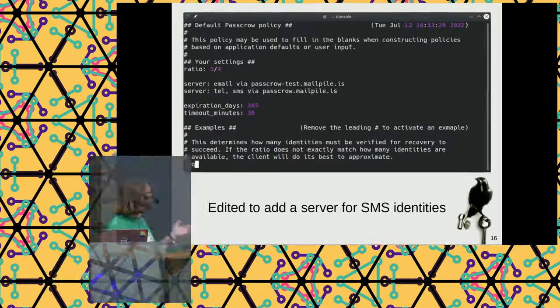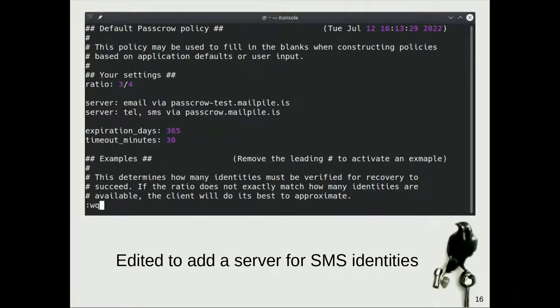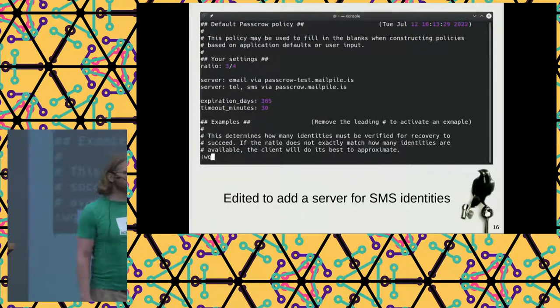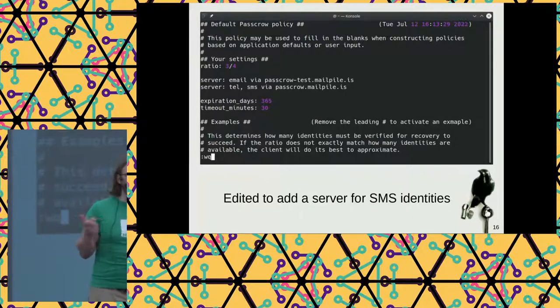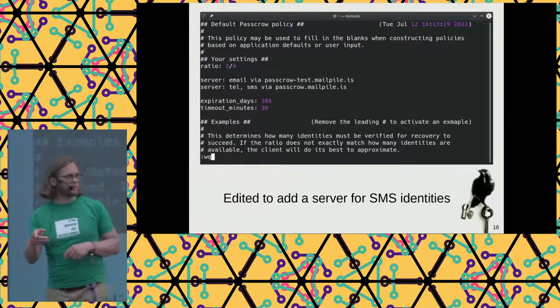You can see some interesting things here. I've edited the defaults to add some bits. I'm specifying the ratio — three out of four. So if I give PassCrow four identities, it will require three of them for recovery to succeed, by tuning the parameters to the Shamir algorithm. And there are some timeouts — I can say I want this data to expire in a year, or in 10 years, or in five days. Has anyone here not recovered a password from something like Gmail? Everyone's done it — those little codes they send you are time-limited. That's that timeout.